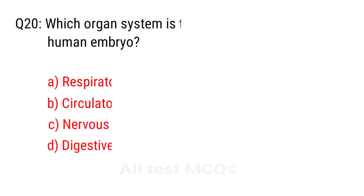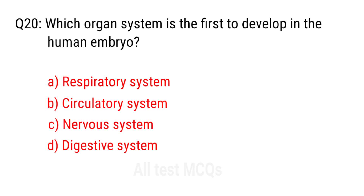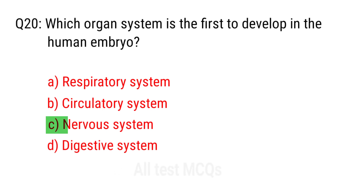Q20. Which organ system is the first to develop in the human embryo? The right answer is option C: Nervous system.